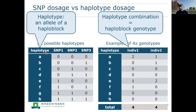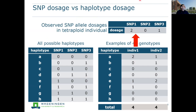Haplotypes are alleles at haploblocks, and a haplotype combination is the genotype of an individual in terms of haplotypes. The observed SNP dosages in a tetraploid individual are obtained by considering how the haplotypes are built up. If we look at individual one with two times haplotype A contributing two zeros, one E contributing one, and one F also contributing one, we get a dosage of two at the first SNP, zero at the second, and one at the third. However, individual two has a different haplotype composition but exactly the same SNP dosages — so the same SNP dosages represent different genotypes.